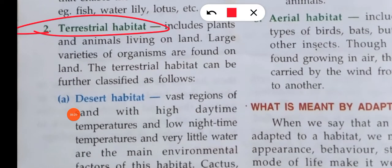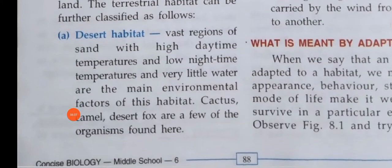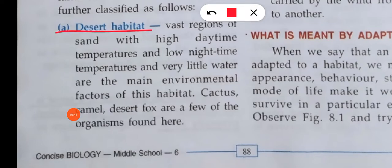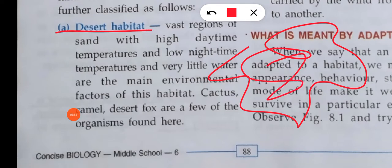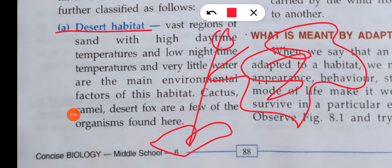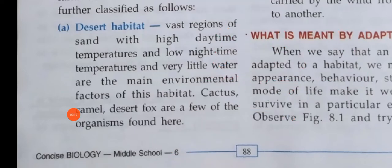Terrestrial habitat is land-based. You will get a huge variety of organisms in terrestrial habitats. Under land habitats, the first category is desert habitat. The desert has high daytime temperature and low nighttime temperature, and there is no cloud cover — so when the sun's rays hit, it is very warm. Animals like cactus, camel, and desert fox are commonly found in the desert.